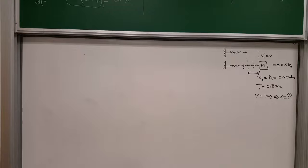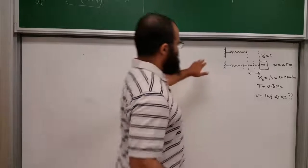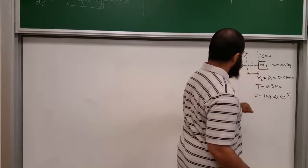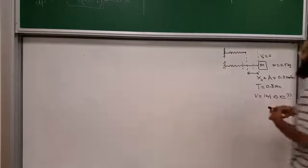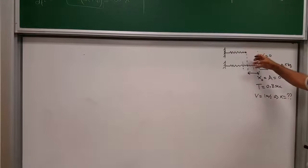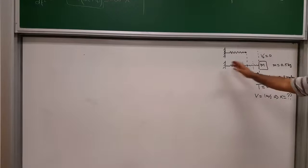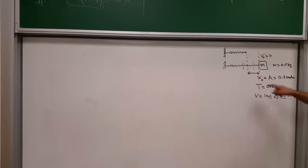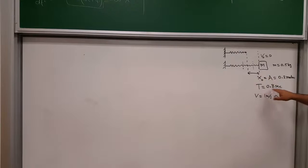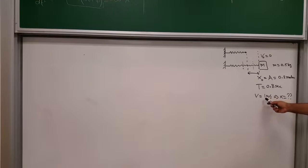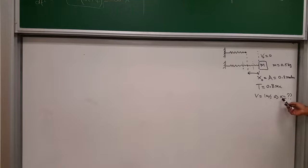The mass is 500 grams or 0.5 kilograms. This is the natural position of the spring — you attach a mass, pull it to the right, and let go, so the mass oscillates back and forth. The maximum disturbance from equilibrium is 0.2 meters. The period is 0.8 seconds. We want to find x when the speed is 1 meter per second.